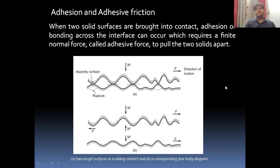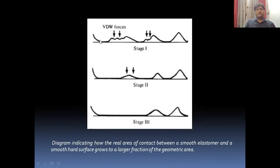When two surfaces are brought into contact, bonding across the interface takes place and to pull apart the two solid bodies, we need adhesive force. The contact takes place at the level of asperities, and when you try to pull these two contact surfaces apart, you have to apply a force called adhesive force. The adhesive force increases with the growth in the asperities — as asperities grow in dimensions, the real area of contact between two surfaces increases, and that is why there is an increase in adhesive force.